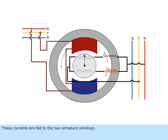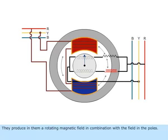These currents are fed to the two armature windings. They produce in them a rotating magnetic field in combination with the field in the poles.